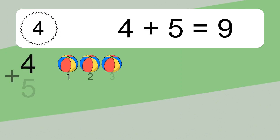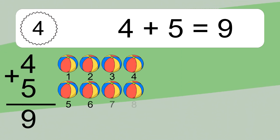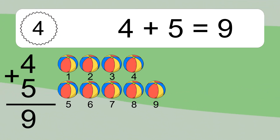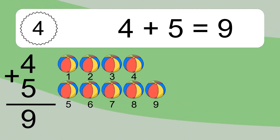4 plus 5 equals 9. Let's count it: 1, 2, 3, 4, 5, 6, 7, 8, 9.